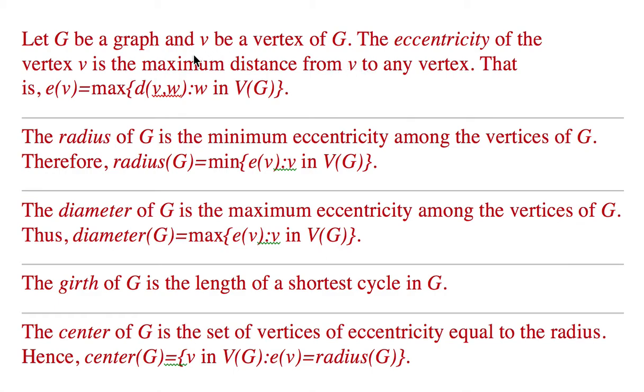The eccentricity of vertex v is the maximum distance from v to any other vertex in the graph. So if vertex w is at maximum distance from v, that distance between v and w is called the eccentricity of the vertex.